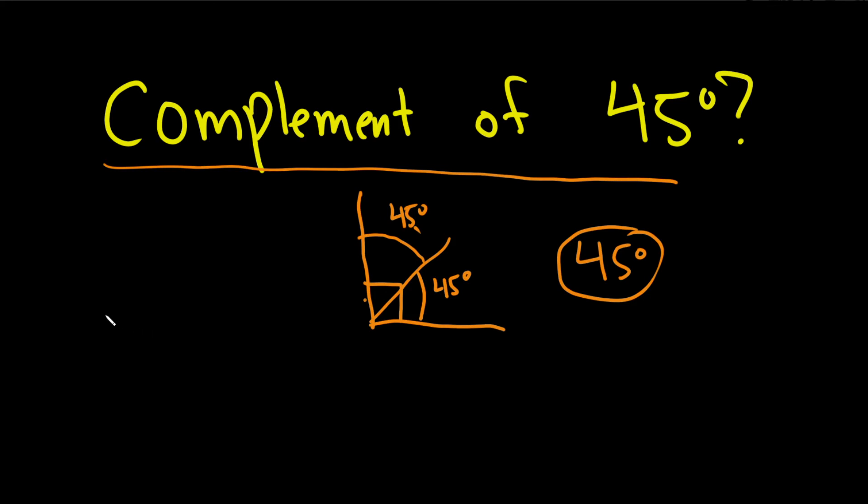If you wanted to do an equation, you could say, I have 45 degrees plus some other angle x, and I want that to equal 90 degrees.